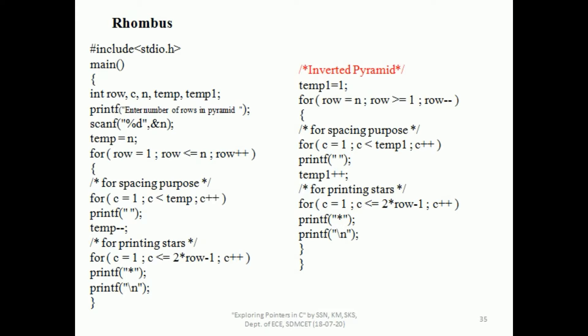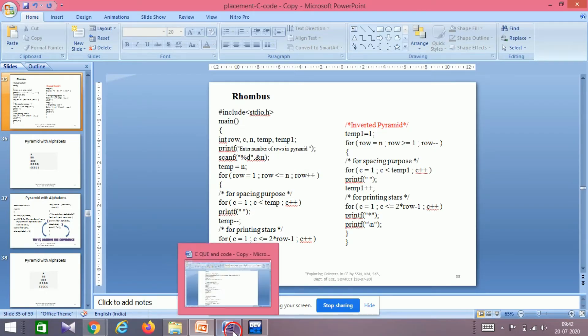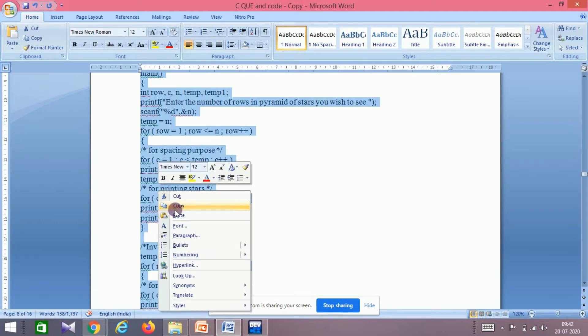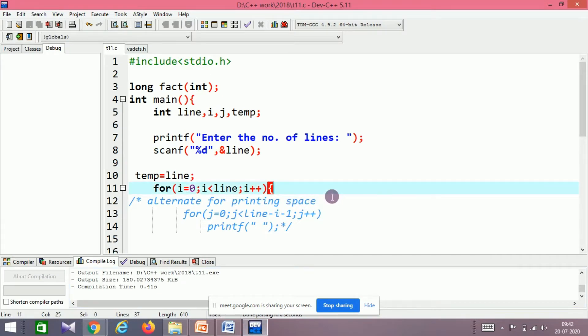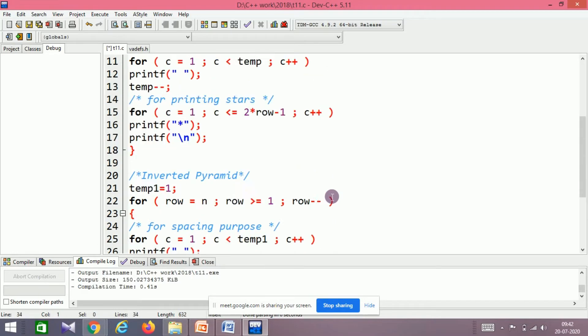Now let's begin today's session — how to print a rhombus. The left-hand side code is just the erected pyramid with stars, no change at all. The right-hand side code is just the inverted pyramid, no change at all. We printed both in the previous session, and now we are simply bringing those two codes together.